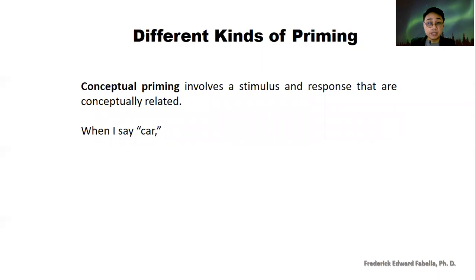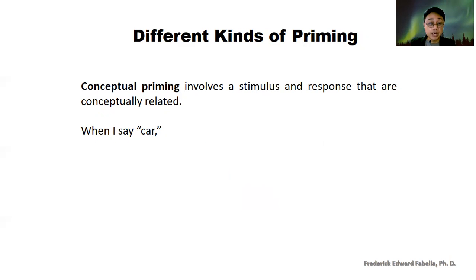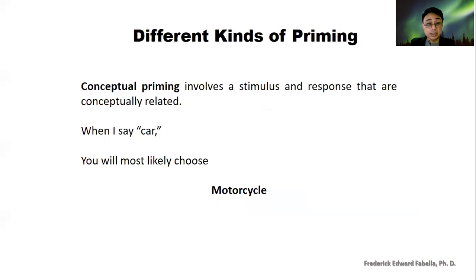Conceptual priming involves stimulus and response that are conceptually related, such as when I say the word car and ask you to choose a word from five options. Which word would you choose? You might choose motorcycle — because they are both vehicles, the concepts are similar.